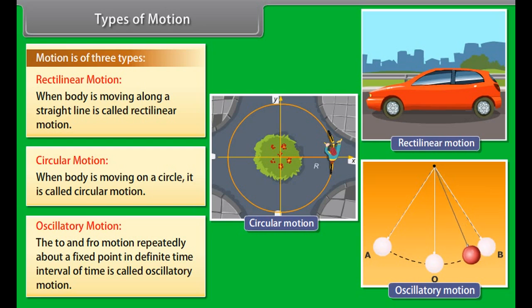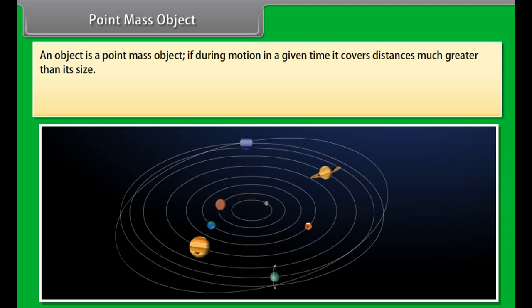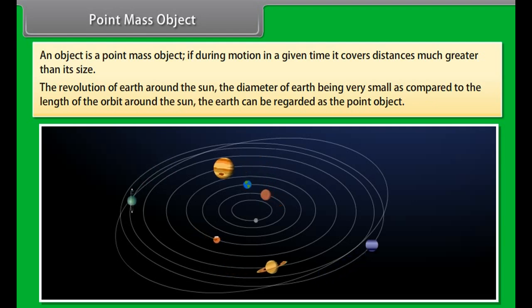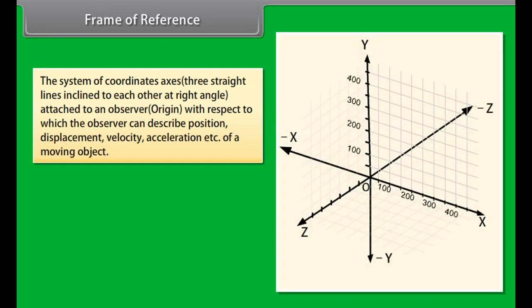Point mass object: An object is a point mass object if, during motion in a given time, it covers distances much greater than its own size. Example: the revolution of earth around the sun. The diameter of the earth is very small compared to the length of its orbit around the sun, so the earth can be regarded as a point object.